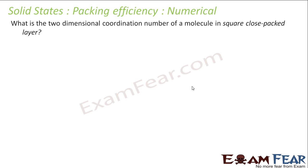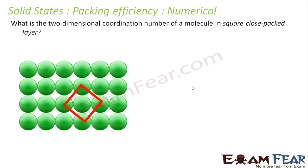Let's take another numerical. What is the two-dimensional coordination number of a molecule in square close-packed layer? So let's draw the square close-packed layer. For example, this atom is linked to 1, 2, 3, 4 other atoms. So coordination number will be 4. Pretty easy, since it is two-dimensional.